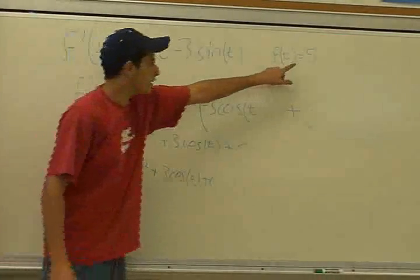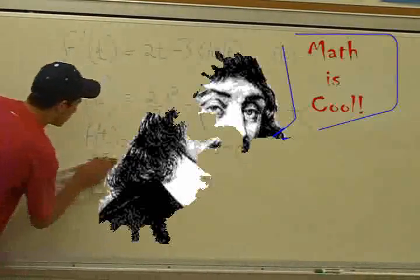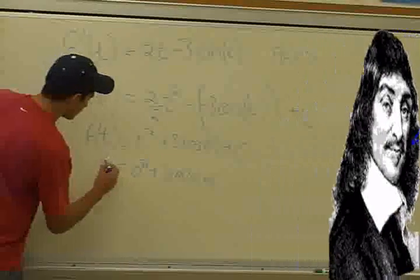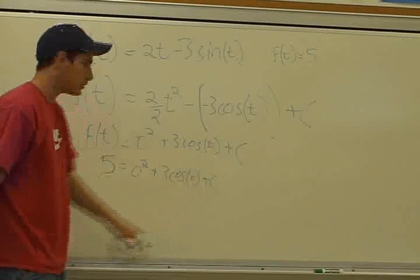And as we see right here, this equals 5. So this whole thing must equal 5 right here. And therefore we can find, we can solve this for c and find what that number is.